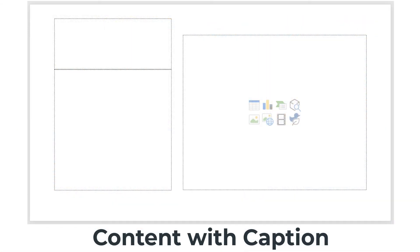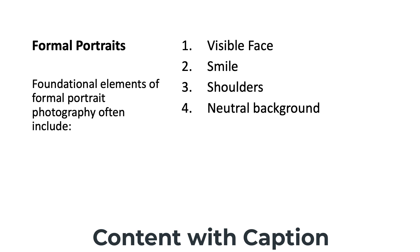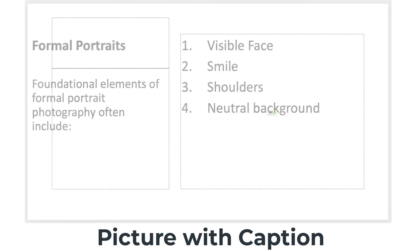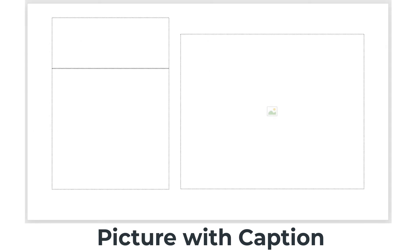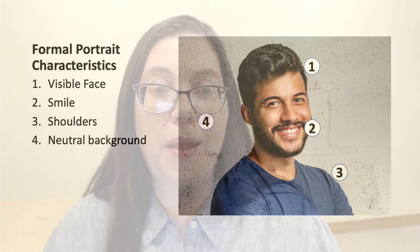The content with caption provides a slightly different layout for displaying text and other content like a table or video. The picture with caption layout is the same layout as the content with caption, except the placeholder is only for an image.